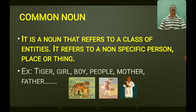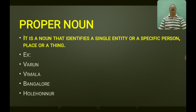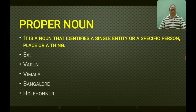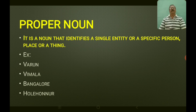The second type is proper noun — a noun that identifies a single, specific person, place, or thing. Examples: the name given to a boy — Varun; a girl's name — Vimala; names of places — Bangalore, Lahunnoor, etc. They are all called proper nouns.